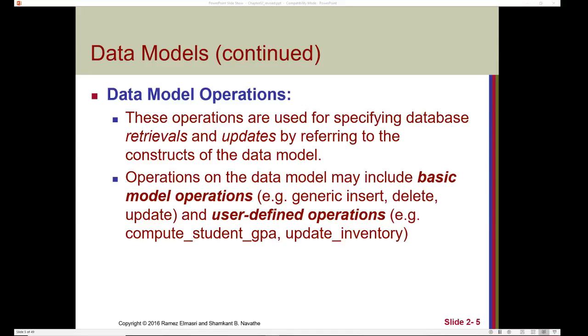For example, consider entering a number of products in inventory. We should set a constraint such that the number of products can only be zero or greater. Operations on the data model may include basic model operations like a generic insert, delete, or update, and user-defined operations — something like computing a student GPA or updating inventory.